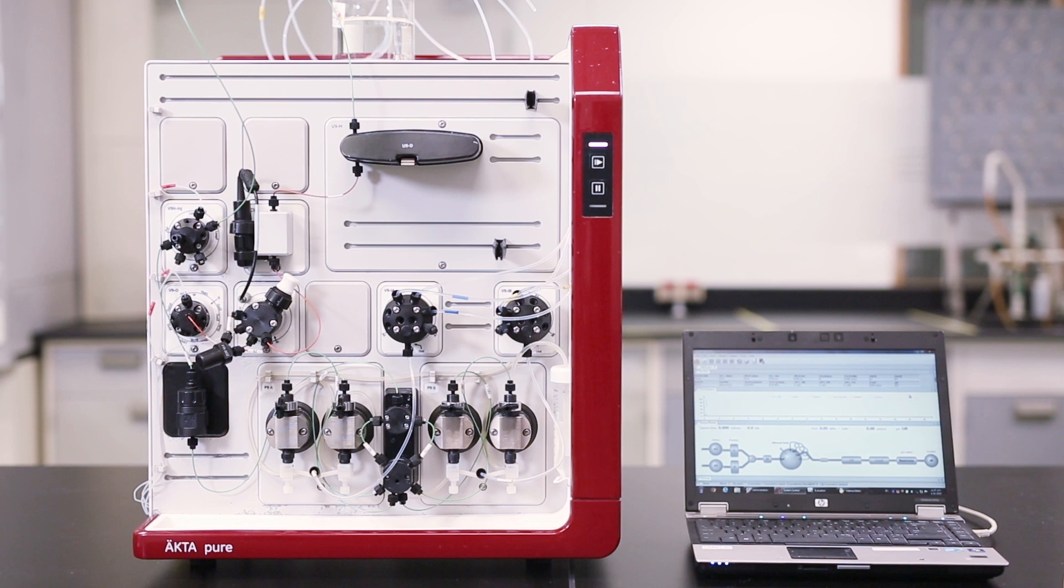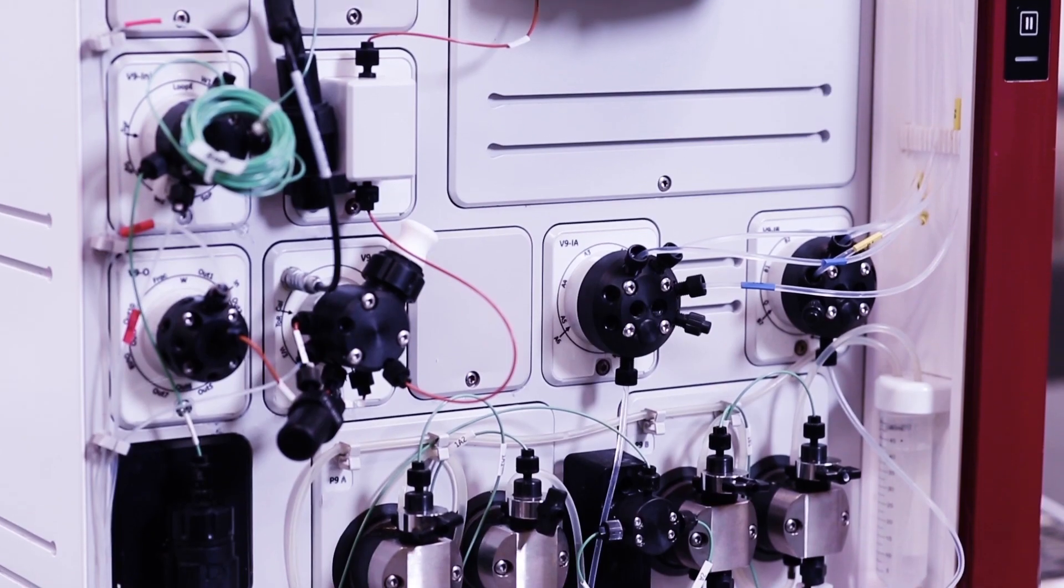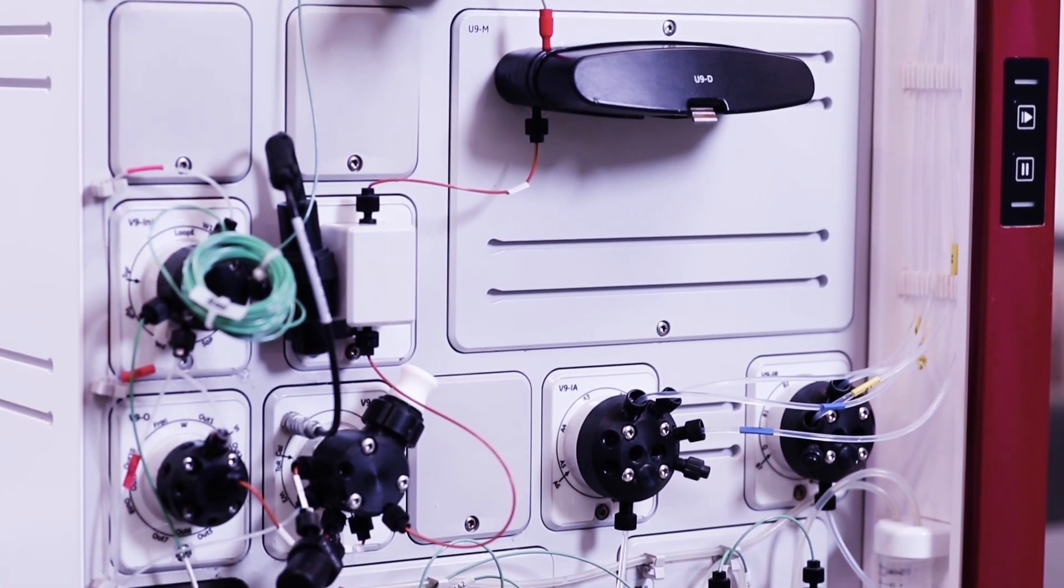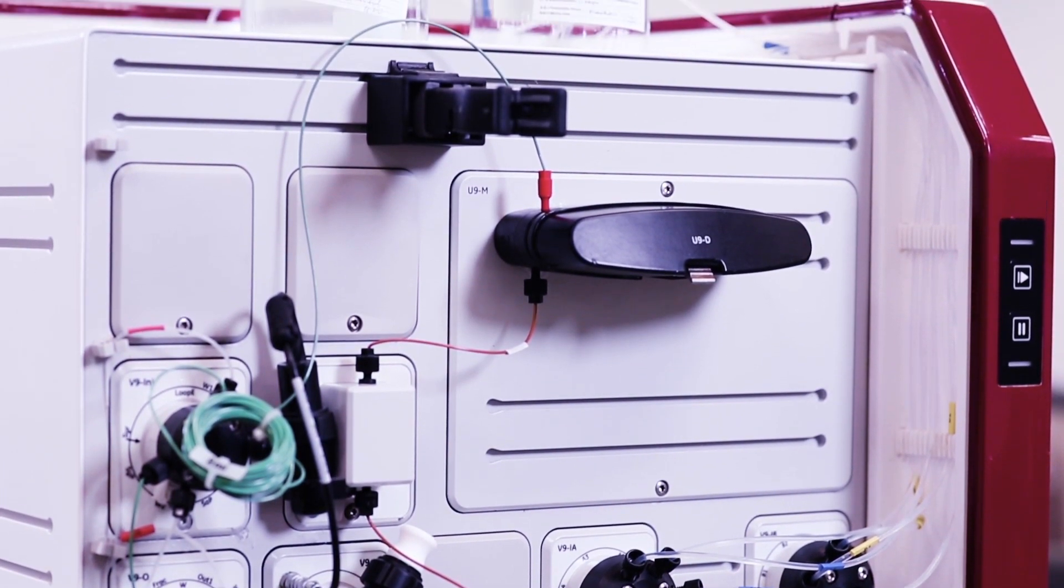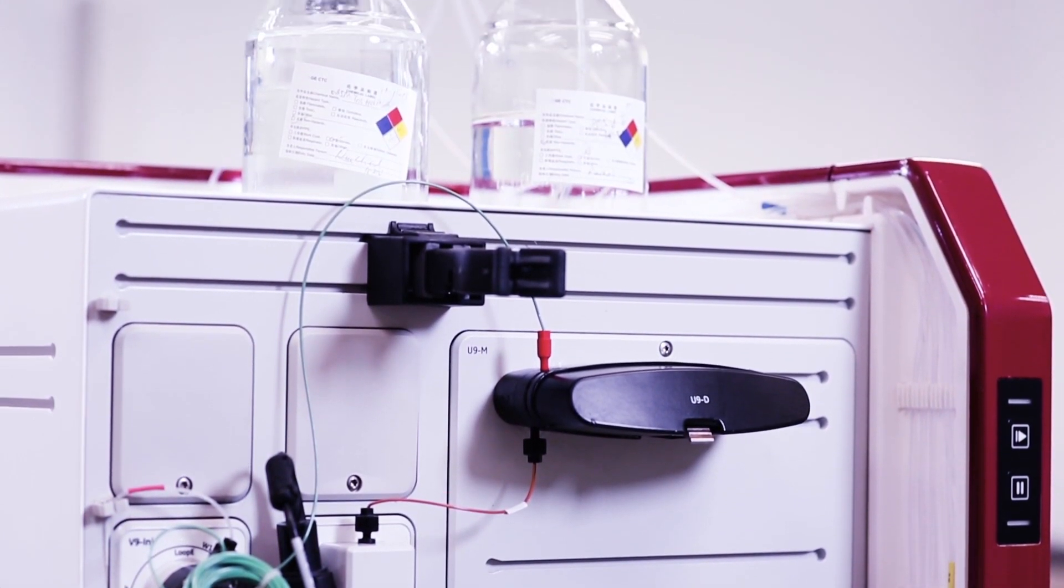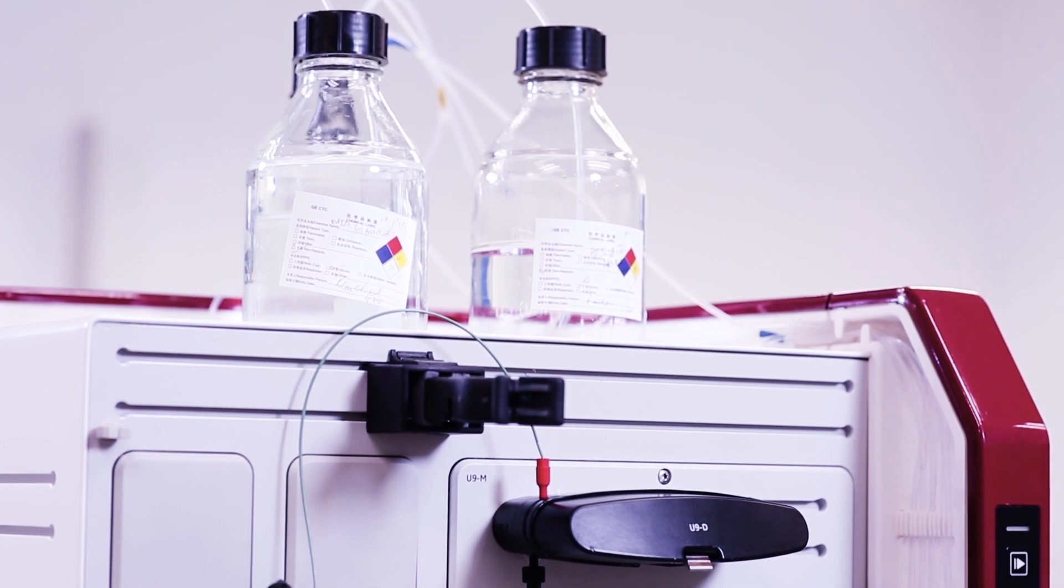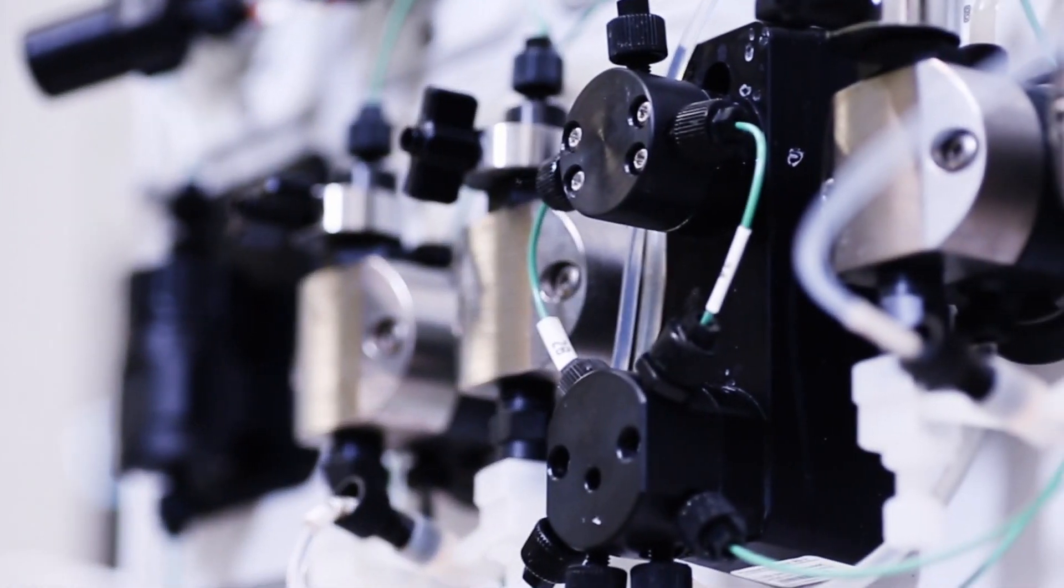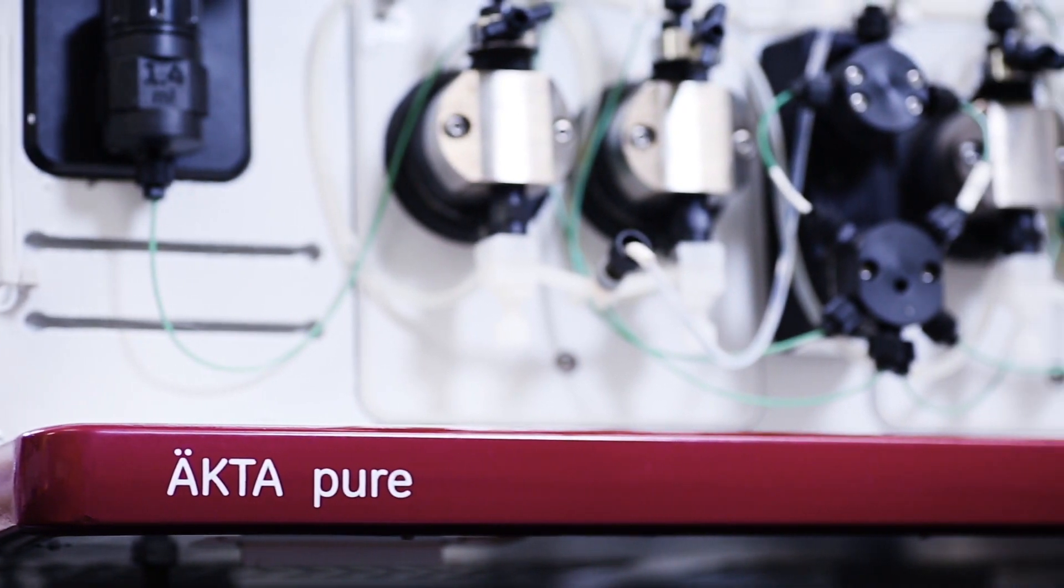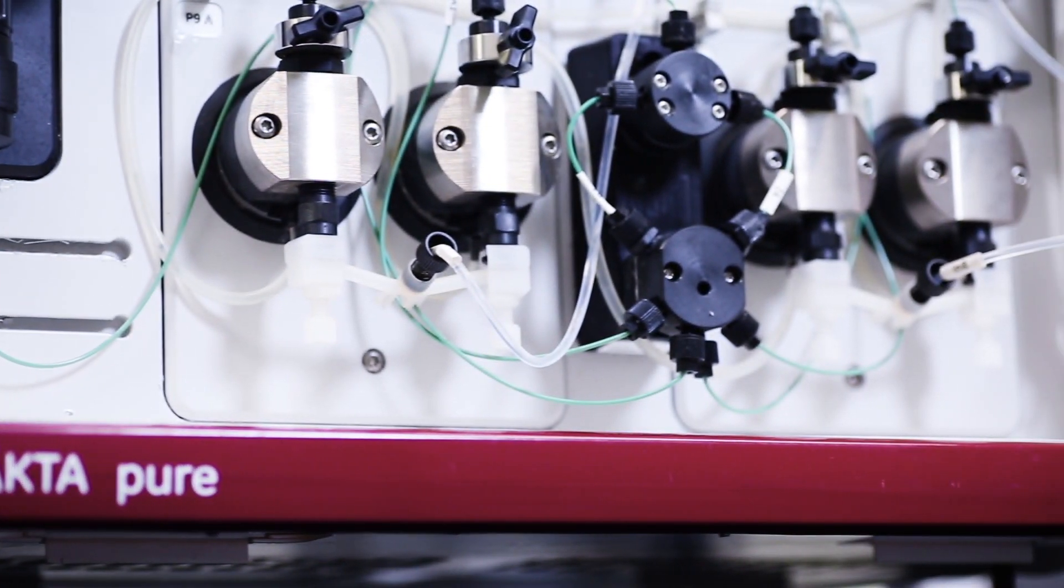Column packing is preferably performed on a chromatography system such as EctaPure. EctaPure is capable of delivering the pressure and flow required to create a well-packed column. In addition, the integrated UV and conductivity monitors along with the Unicorn Control software will help you evaluate the quality of the column packing.